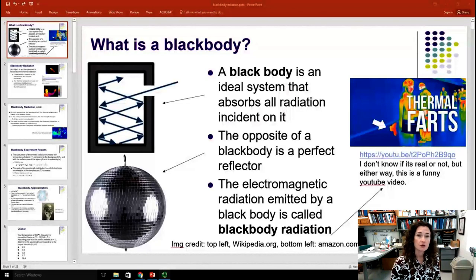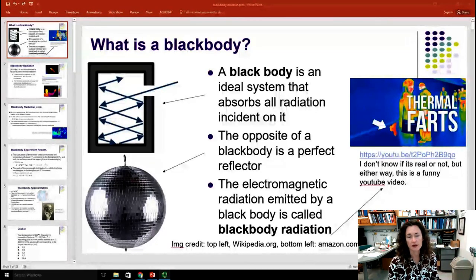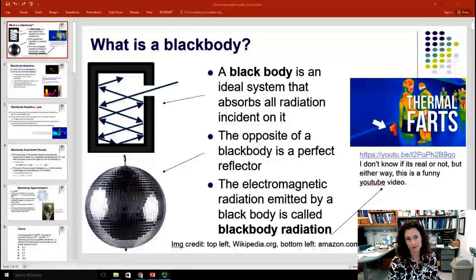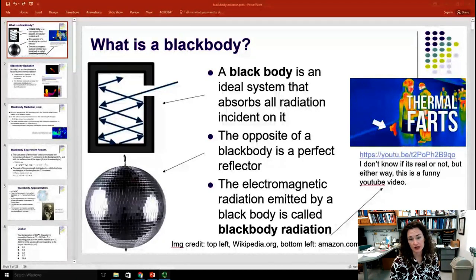Now it was known in the 1800s that objects emitted radiation solely based upon the surface properties, how reflective it was, and what temperature it was. So if you looked at the radiation coming off of an object, that radiation would be called the black body radiation.